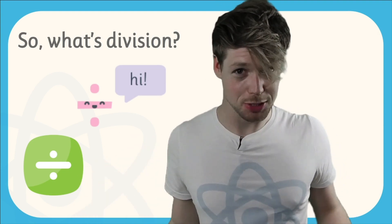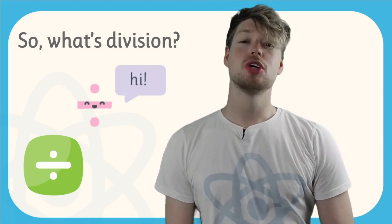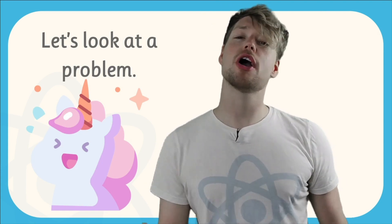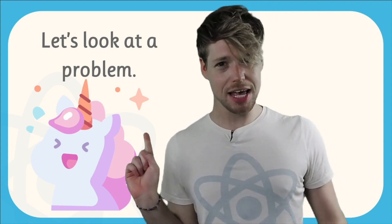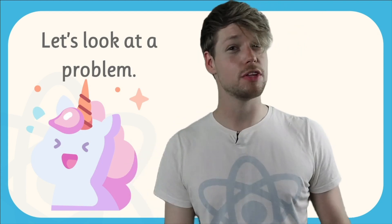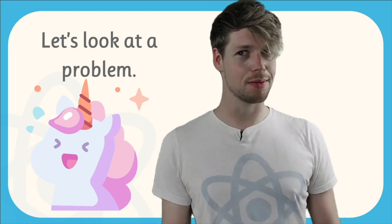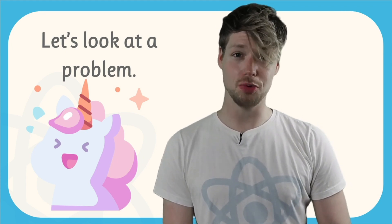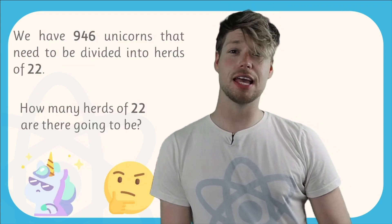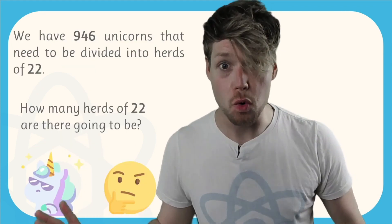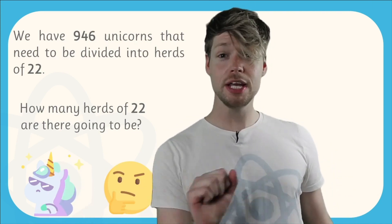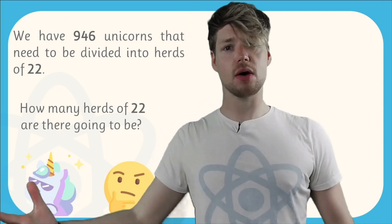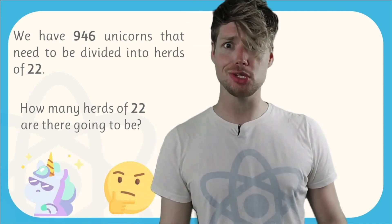Let's have a look at a problem. I always think that's an easier way to learn about math. We'll work through a problem together. If you've been to any of our other videos you may know that unicorns can sometimes feature. We're going to be looking at a long division problem all to do with unicorns. Let's say we have 946 unicorns and we need to divide them equally into herds of 22.